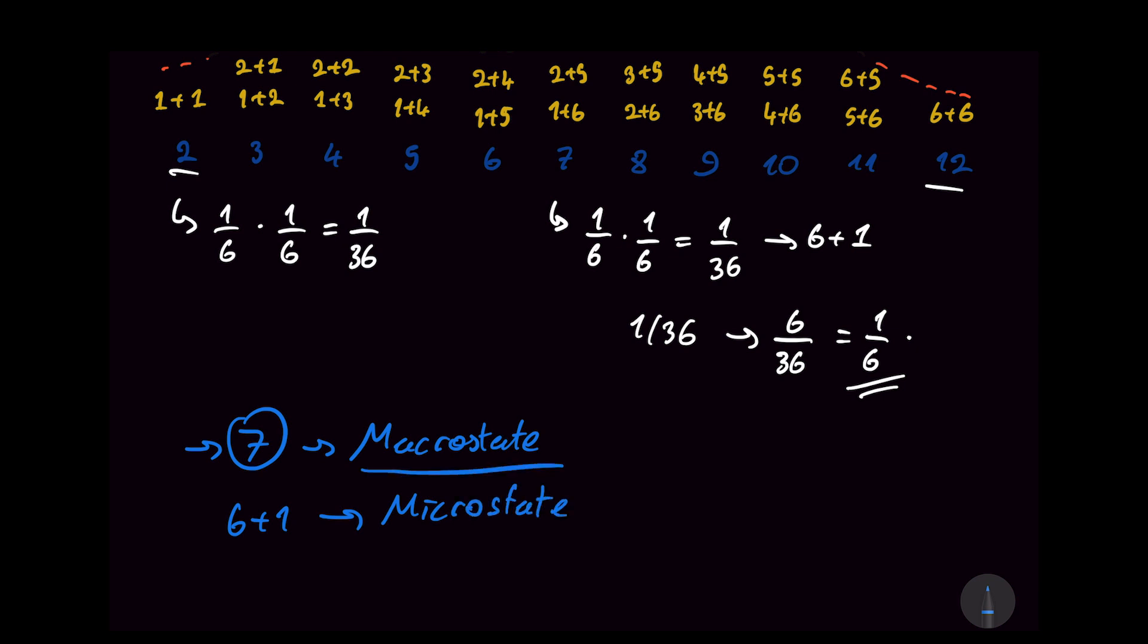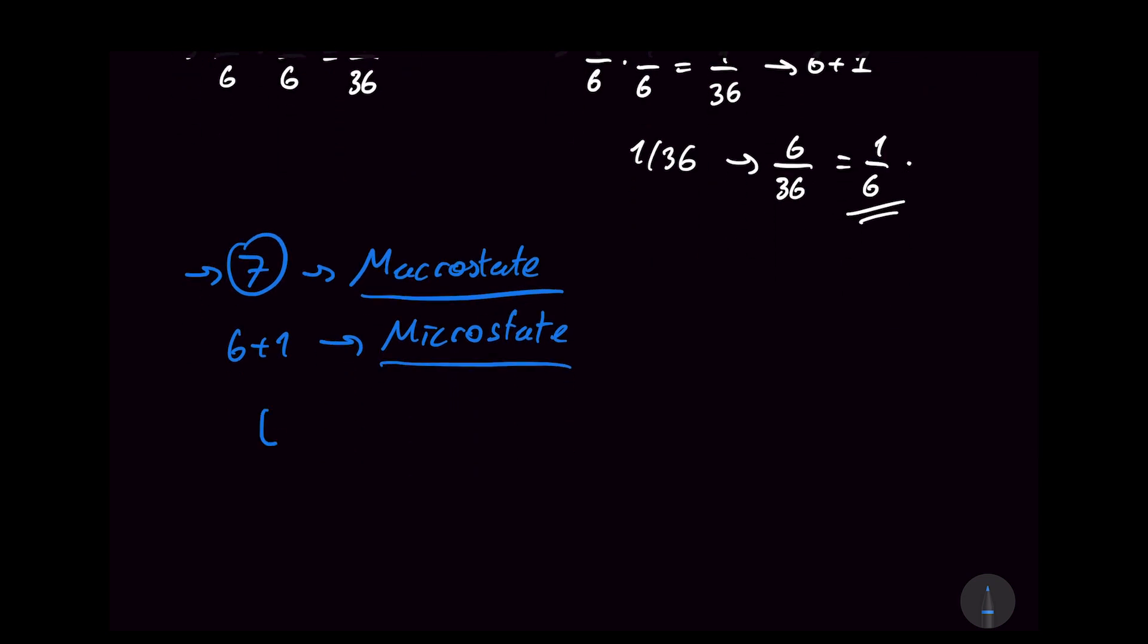So this is called a macrostate because we're not really keeping track of what exactly happened with the two dice that made up the system. With the macrostate, we also need to know that it's a 6 plus 1 that gave rise to a 7.